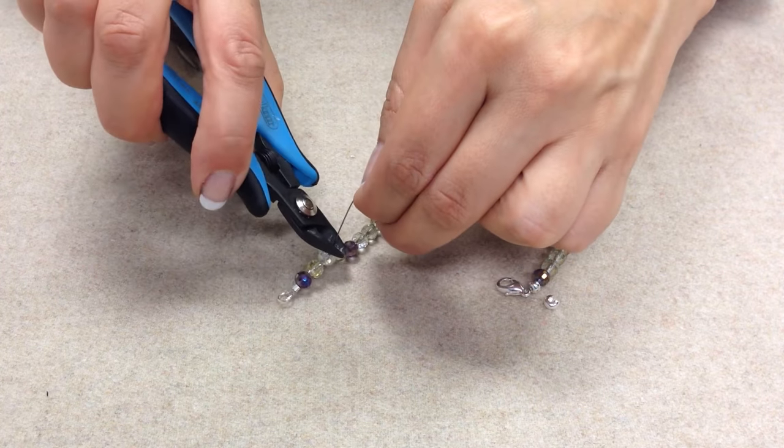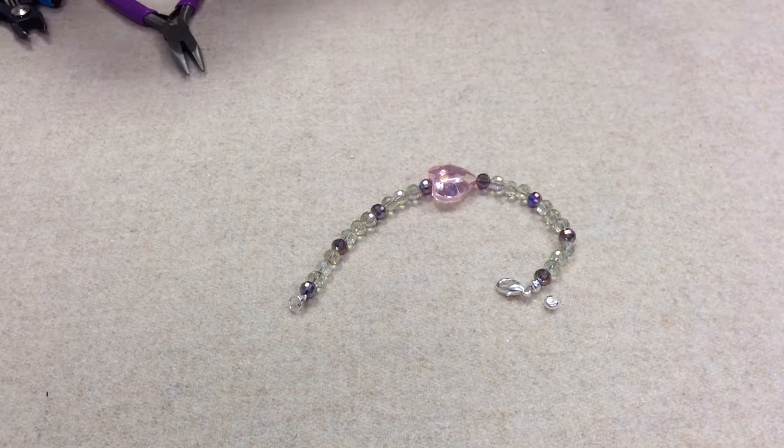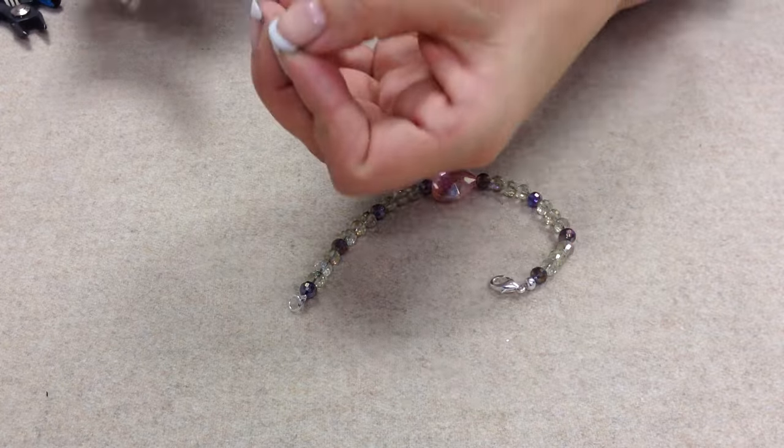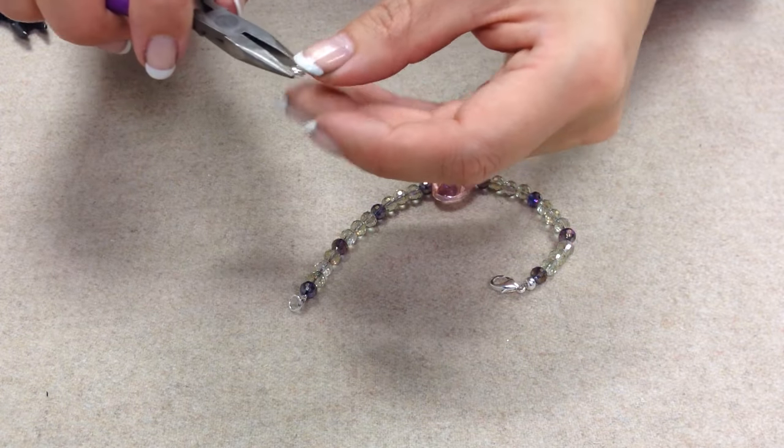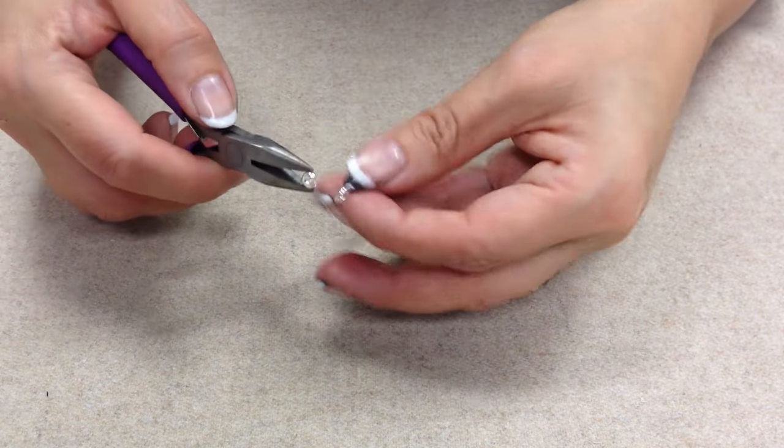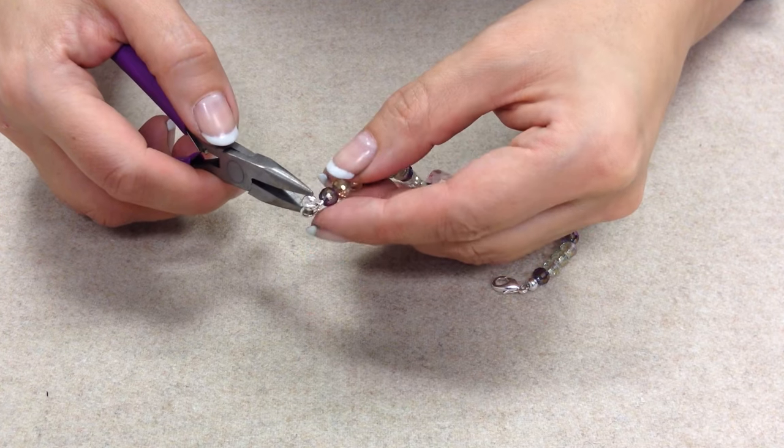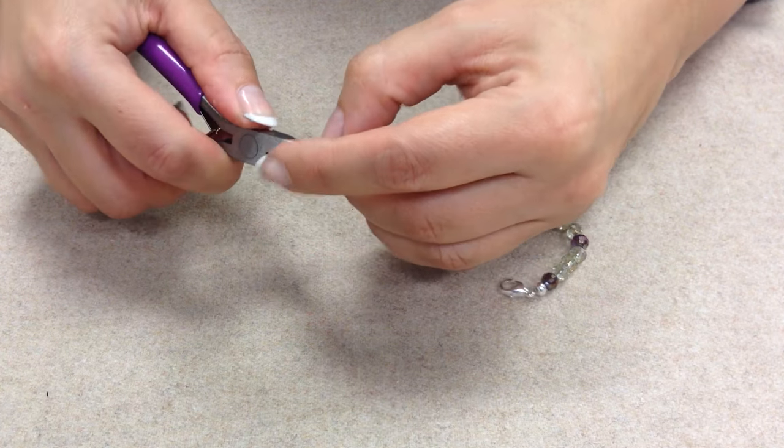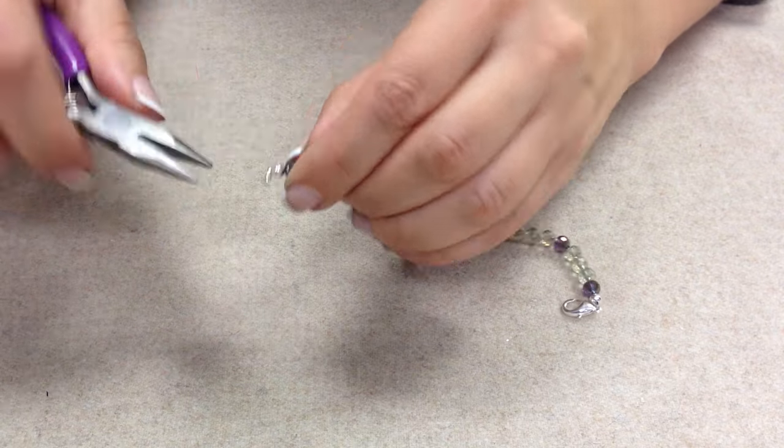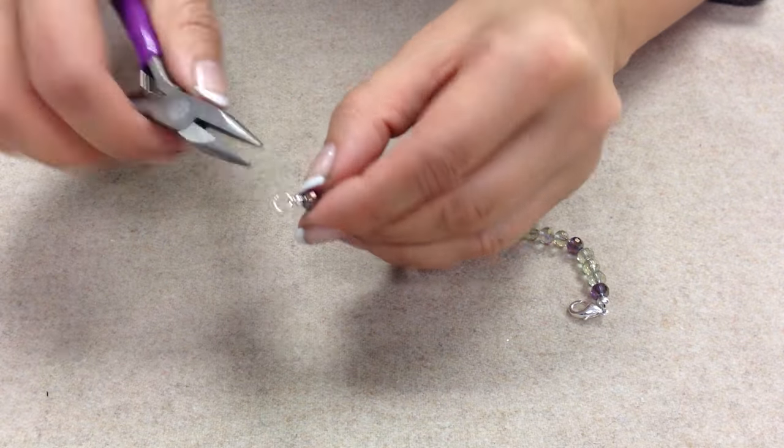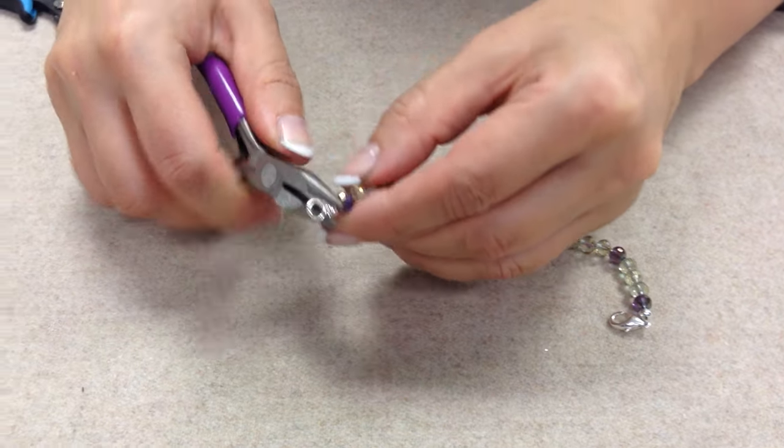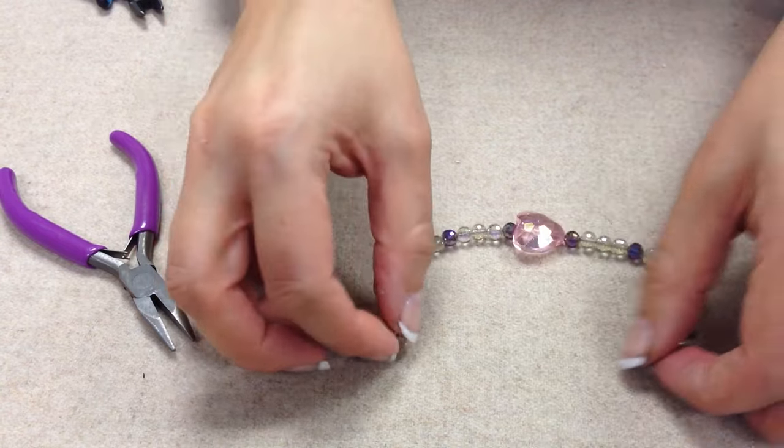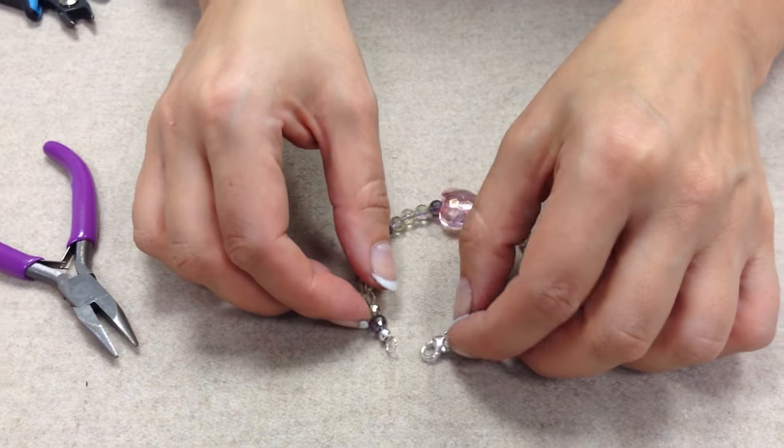After you've flattened the crimp tube, cut the excess wire that you passed through two or three of the beads. Then place the crimp cover over the crimp tube, pressing it down lightly with your flat nose pliers to avoid denting it. Use the lightest touch—you may need to press it several times to get it even. That completes your project.